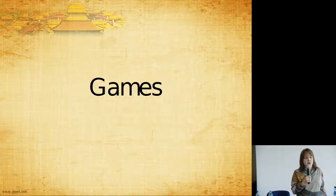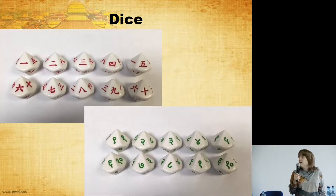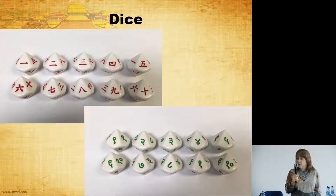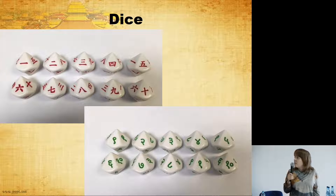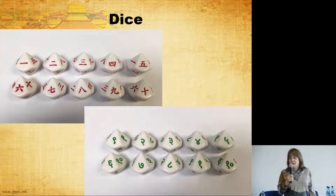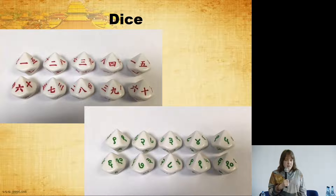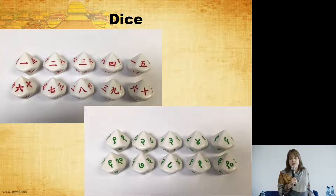Now let's talk about actual games, because gamification is not the same as a game. One thing you could do if you're learning a foreign alphabet that has different numerals is get dice that have foreign numbers on them. They exist for every alphabet in the world — Thai, Burmese, anything. They're ten-sided dice with the basic numerals zero through nine. If you play a game like Yahtzee with them, you can easily learn the numbers.